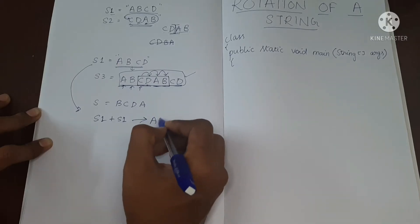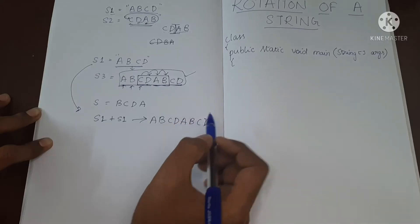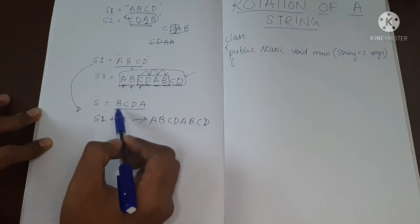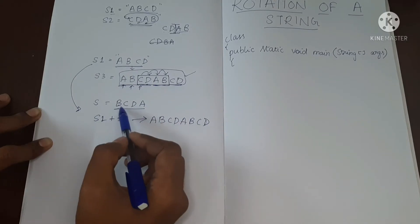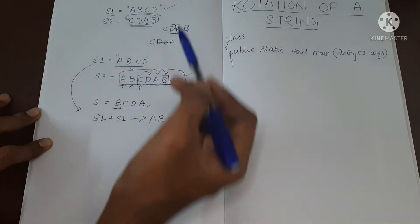So this is A, B, C, D, A, B, C, D. And now let's check if this is present over here. If it is present, it means this is a rotation of S1.